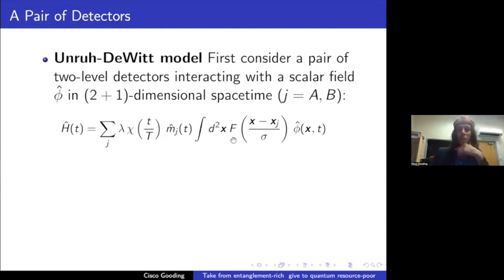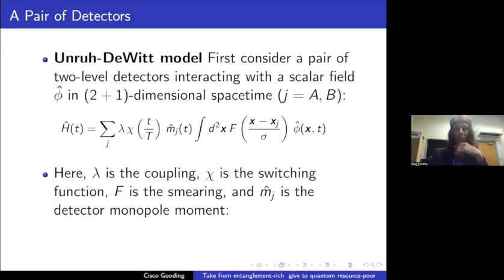The interaction Hamiltonian is based on a combination of a smearing function and a switching function that basically tells you how long your interaction is and how spatially localized it is. And then the usual combination between a monopole moment that describes the detector, J labels the detector for both A and B, and phi is the field that we're going to be probing with these detectors. And lambda is just a coupling constant to mainly keep track of the terms in the perturbation series. The monopole moment is a standard Unruh-DeWitt type for a two-level system, just has these Pauli matrices for each of the two detectors.